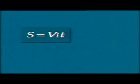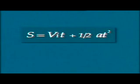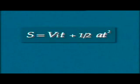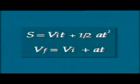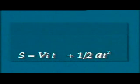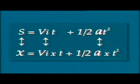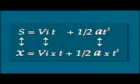Now we take up the equations used to solve problems of projectile motion. These are: distance s = vi·t + ½·a·t², and final velocity vf = vi + a·t. Taking equation one for the horizontal direction, we replace s by x, vi by vix, and acceleration a by ax. Therefore equation one takes the form: x = vix·t + ½·ax·t².